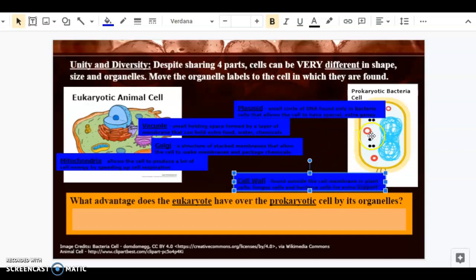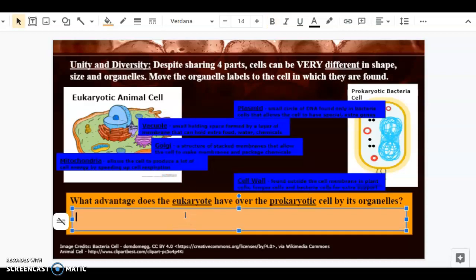So we have two items here found just in the bacteria, prokaryotic cell, and three found just in the animal, eukaryotic cell. What advantage do these three items that are found only in the eukaryotic animal cell give it? Well, having vacuoles allow it to store extra food, water, and chemicals.